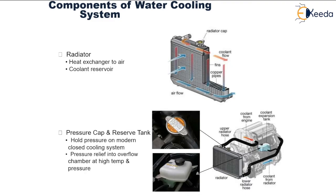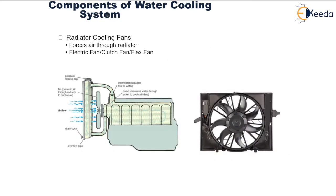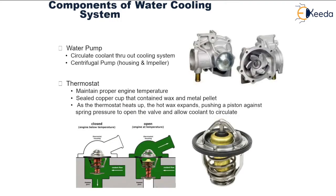The pressure cap and reserve tank hold the pressure in the closed cooling system and also release pressure into the overflow chamber when high temperatures and pressures are encountered. The radiator cooling fans draw a draught of air over the radiator, allowing the circulating coolant to give away the heat it has carried from the combustion chamber. The water pump, as the name indicates, circulates the coolant throughout the cooling system.